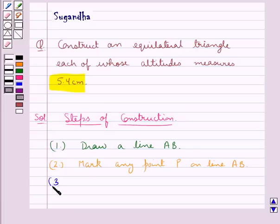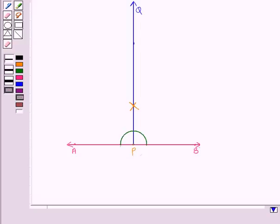In the next step we draw PQ perpendicular to AB. So we have drawn this PQ perpendicular to AB.